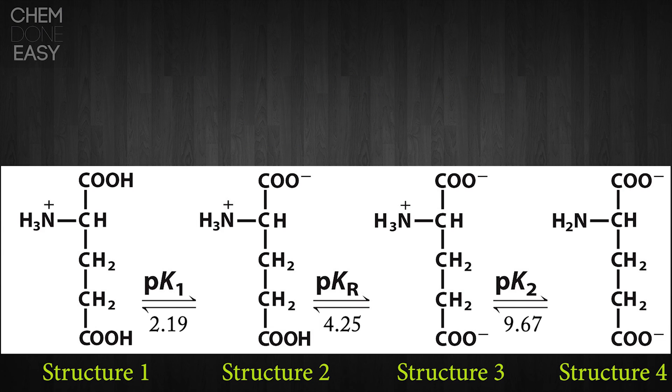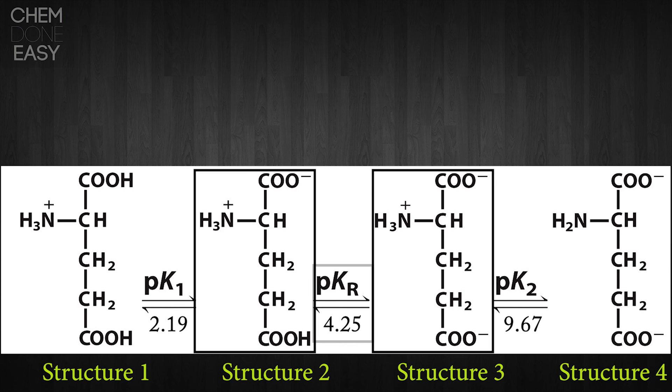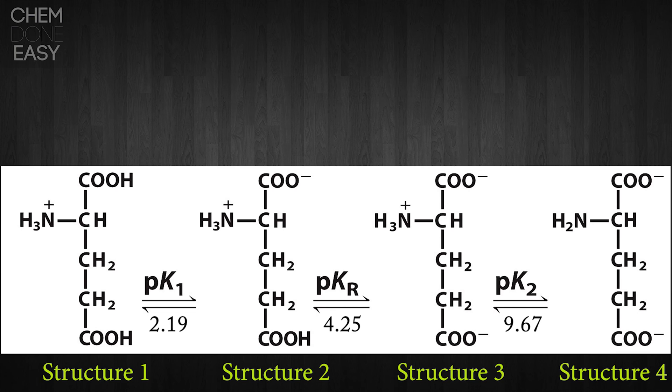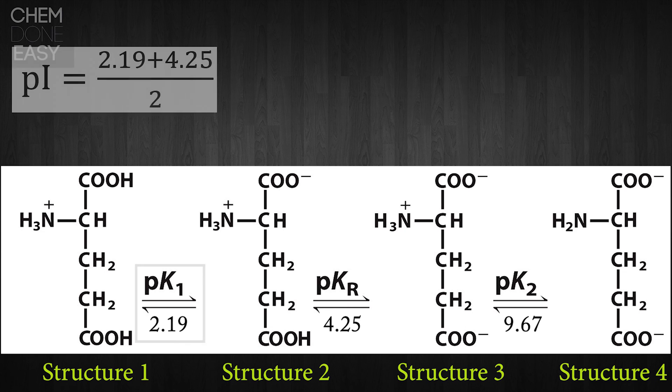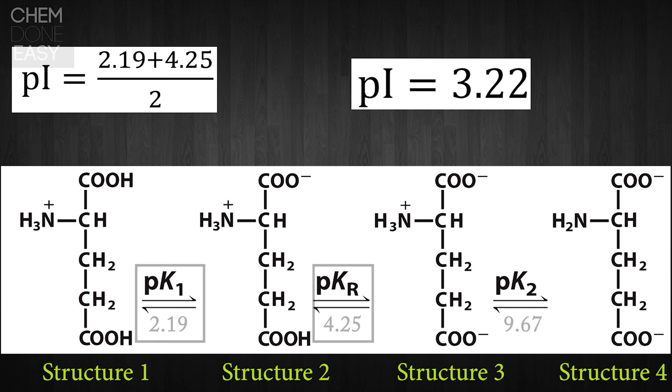Now, if we have a look at structure two and structure three, it has a pKa value of 4.25. So what we need to do is take an average of those two pKa values. So we're going to take 2.19 plus 4.25 and divide it by two, and this will give us an isoelectric point of 3.22.